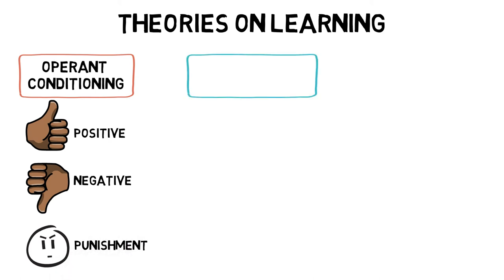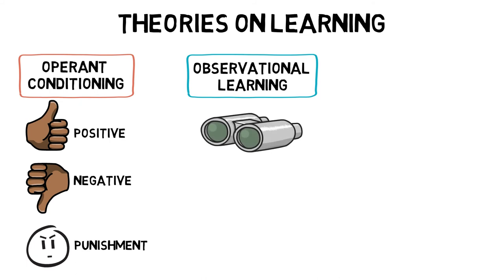Observational learning is learning through observing others, by creating a mental picture of skilled movement, learning through demonstration or copying a role model.